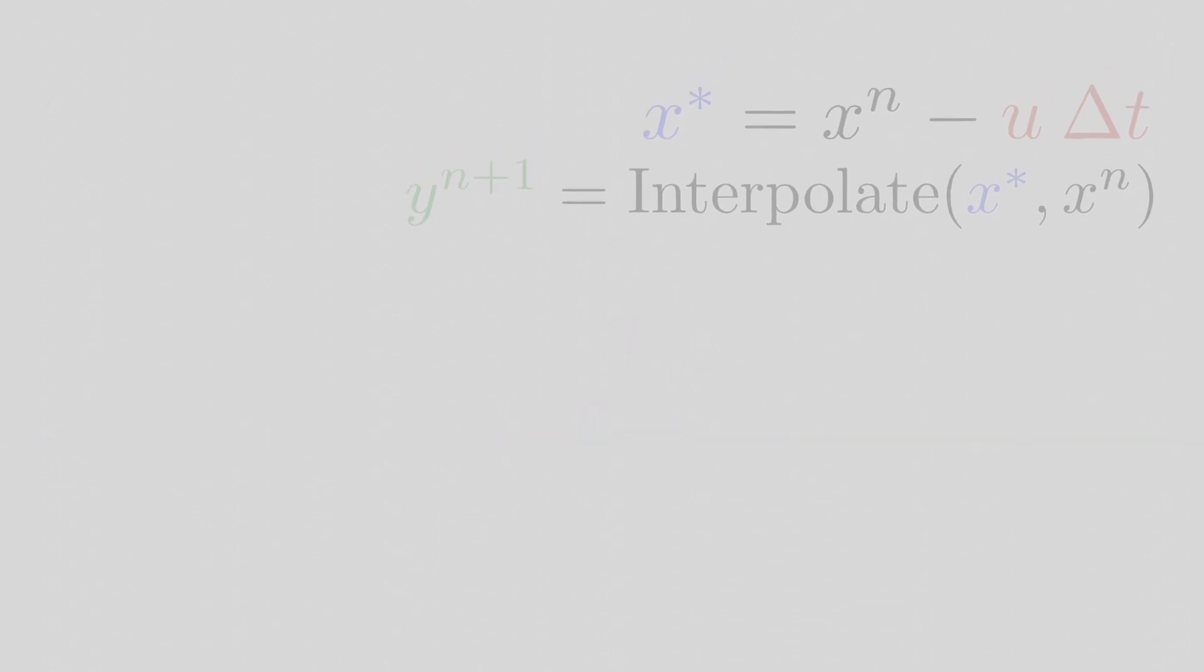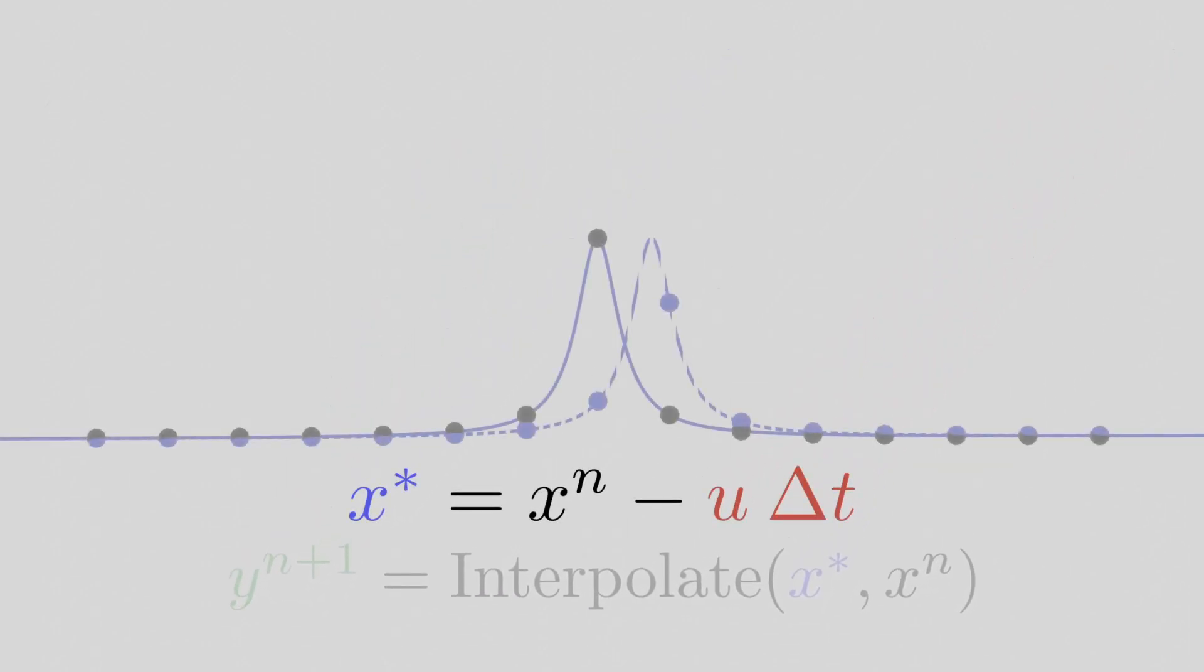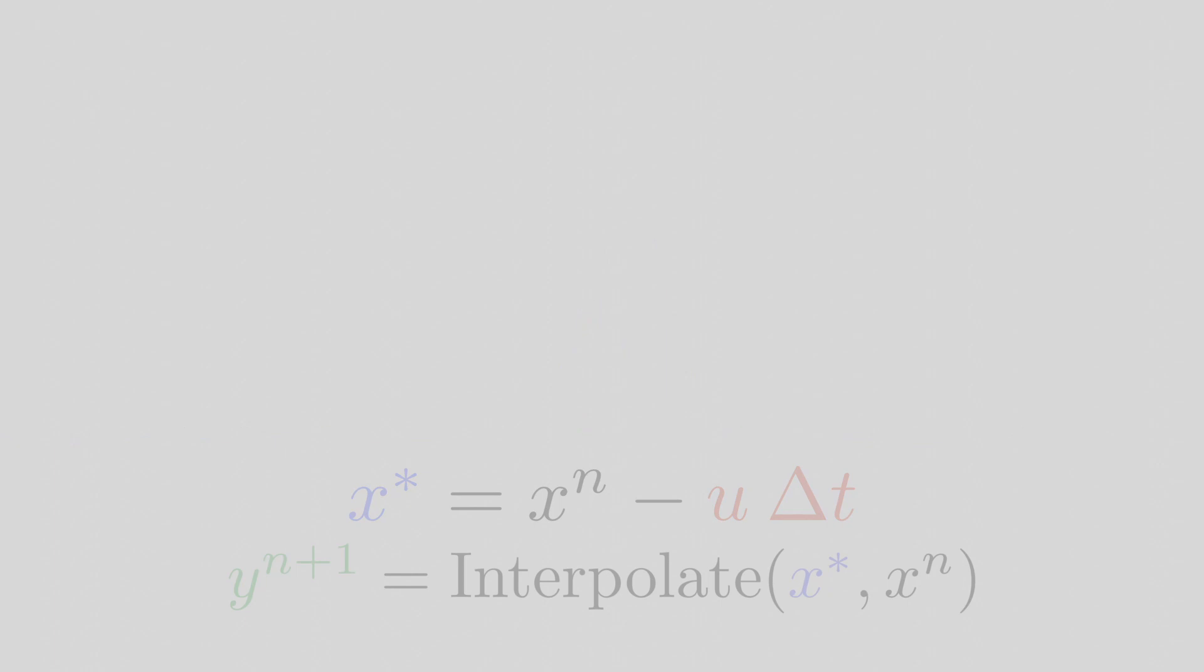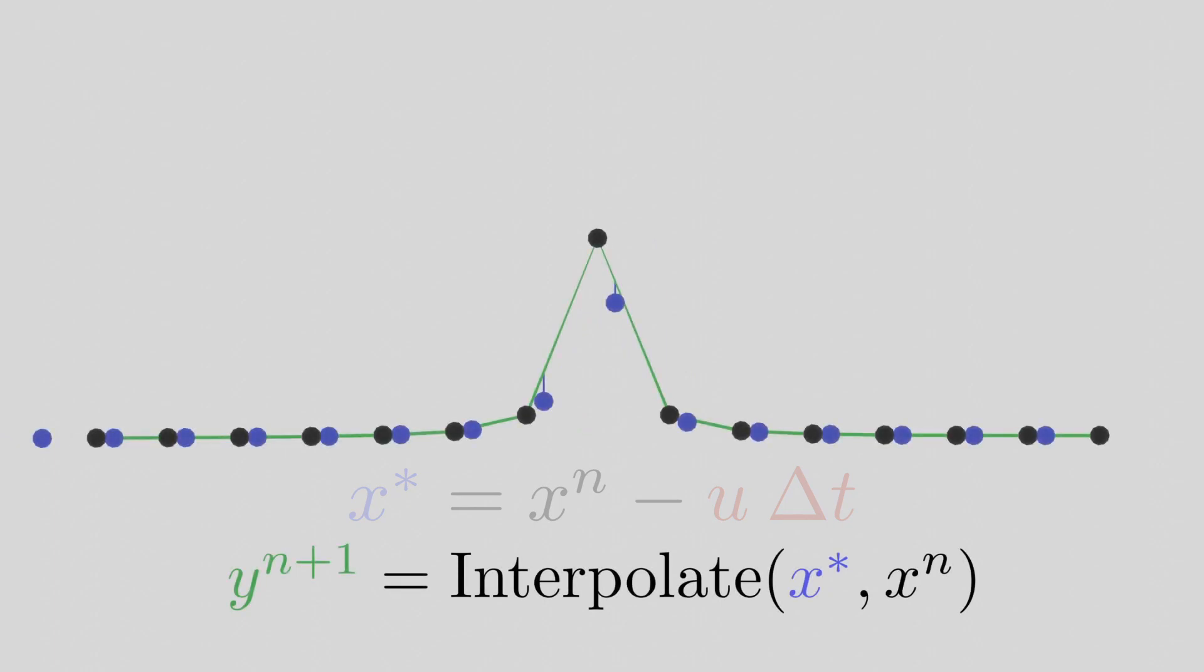So, to summarize, we have to treat the grid points as particles and move them in the opposite direction of the velocity field, and then we calculate the values of the quantity of interest at these locations, with an interpolation method of our choice.